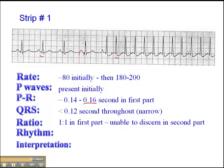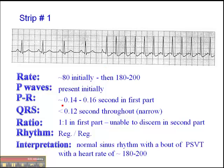The rhythm is regular in the first part and regular in the second part, which is important. When you see a very abrupt onset of tachycardia like this, this is not normal. This is not your typical adrenaline rush — when you experience a fight-or-flight response, your heart rate increases over 3, 4, 5, 6 beats, not in a single beat. When you see this kind of abrupt change, this is a normal sinus rhythm with a bout of PSVT, with a heart rate of between 180 and 200.